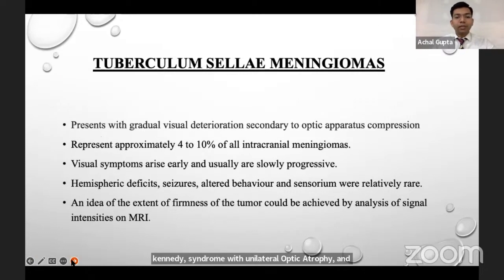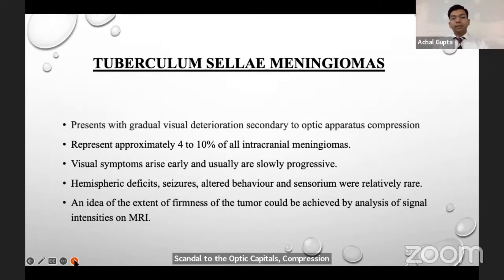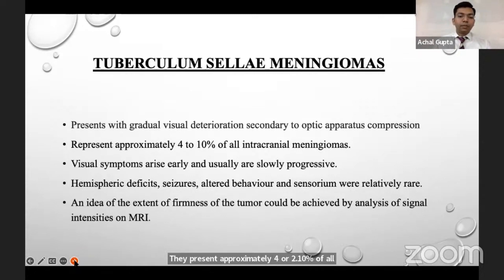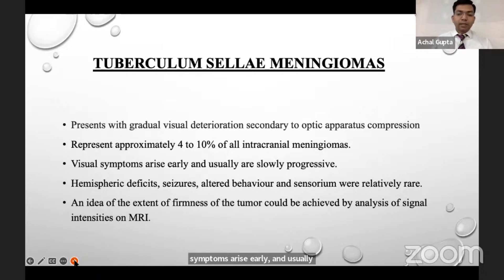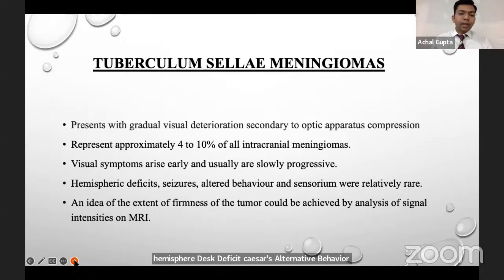Tuberculum sellae meningiomas present with gradual visual deterioration secondary to optic apparatus compression, representing approximately 4 to 10 percent of all intracranial meningiomas. Visual symptoms arise early and are usually slowly progressive. Cerebral symptoms are rare, including hemispheric deficits, seizures, altered behavior, and altered sensorium.